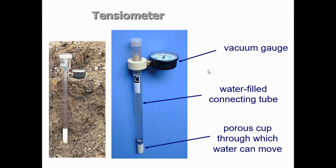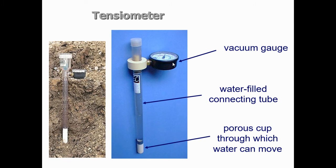Each soil type has known threshold readings for when to irrigate. Sandy soil dries very fast — in Oman's climate it might need irrigation every two days. Clay soil under the same conditions might last four days because it holds water longer and dries more slowly.